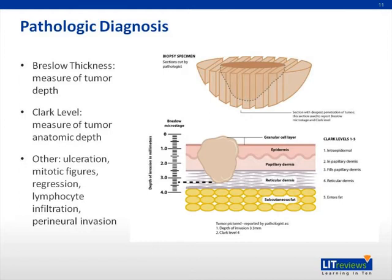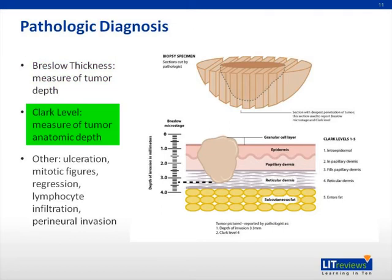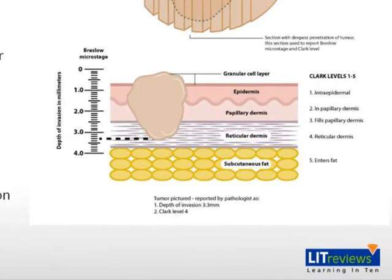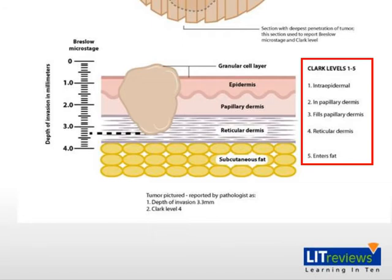Usually a skin biopsy is performed for any suspicious lesion. Biopsies are usually performed with a punch biopsy, although recently evidence exists that shave biopsies may also be appropriate. Historically, punch biopsies have been used if you are suspicious of melanoma. If the diagnosis is melanoma, the historical features are the Breslow depth and Clark level. Breslow depth is a measure in millimeters of the tumor thickness in the skin, while Clark level is a measure of the anatomic level of invasion. This diagram demonstrates the differences showing the depth on the left-hand side measured in Breslow thickness, and on the right, the Clark levels show the anatomic location.